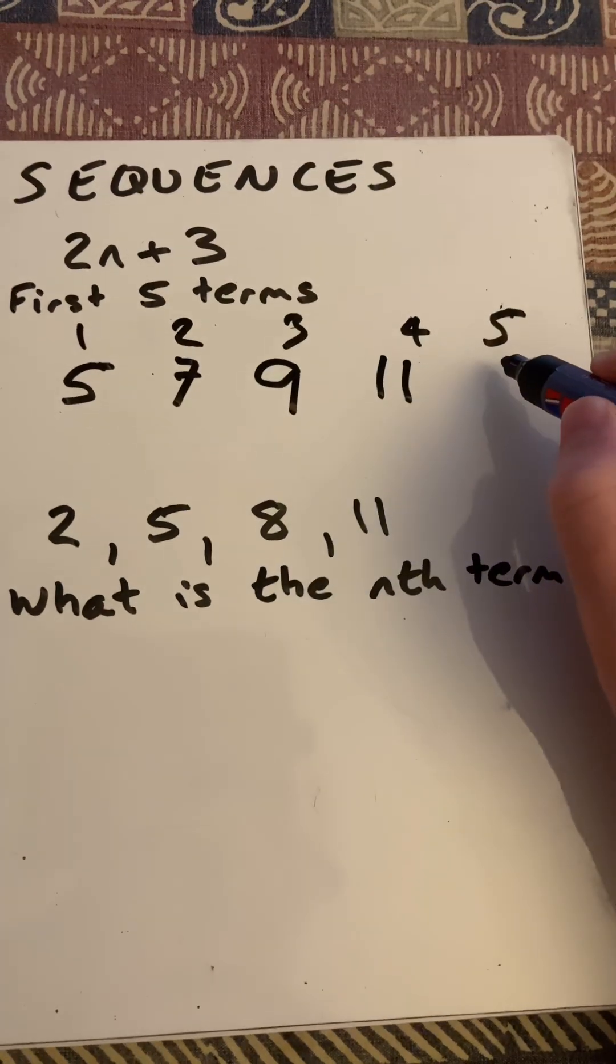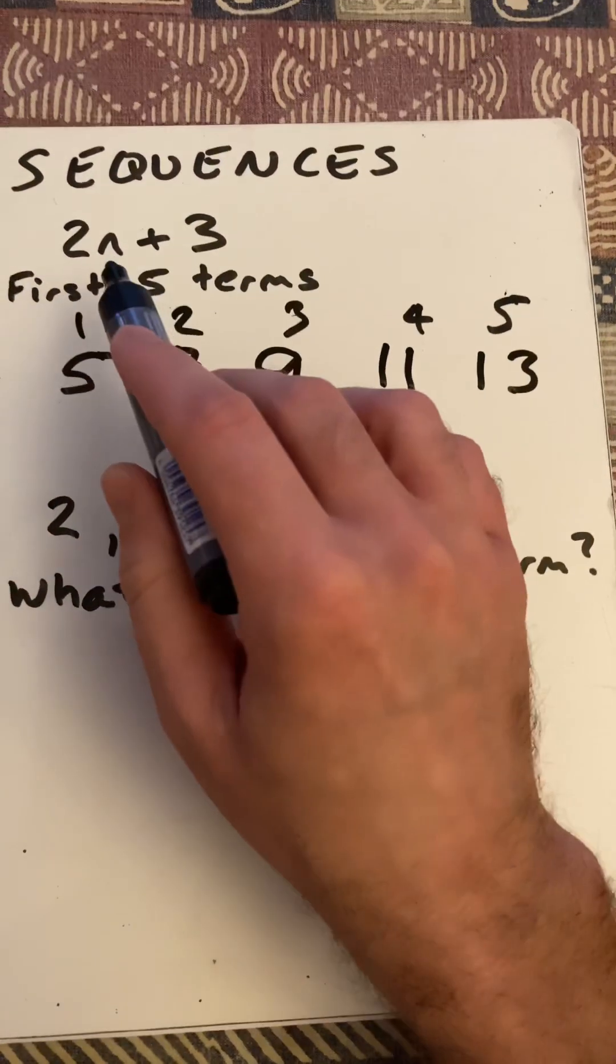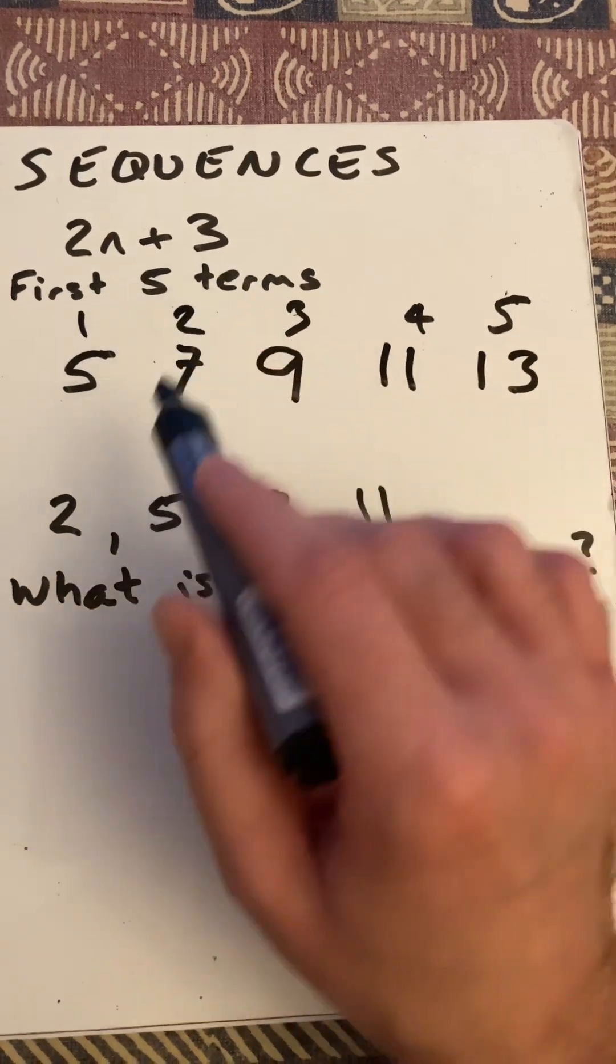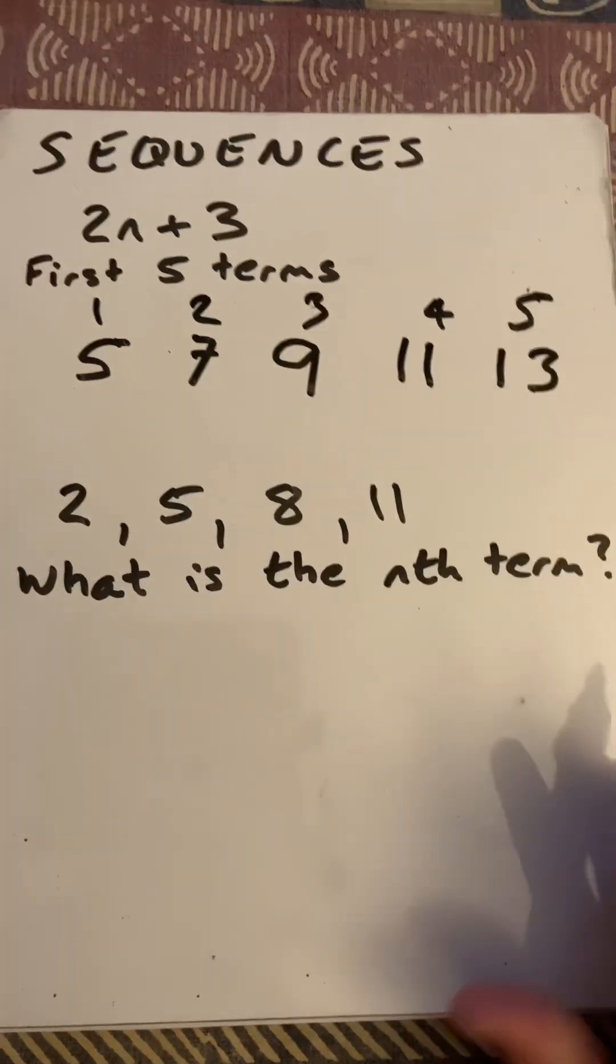So I can go straight to 11 and then 13. And I can check that by going 5 times 2, which is 10, plus 3. So I've managed to generate the first five terms with that formula there.